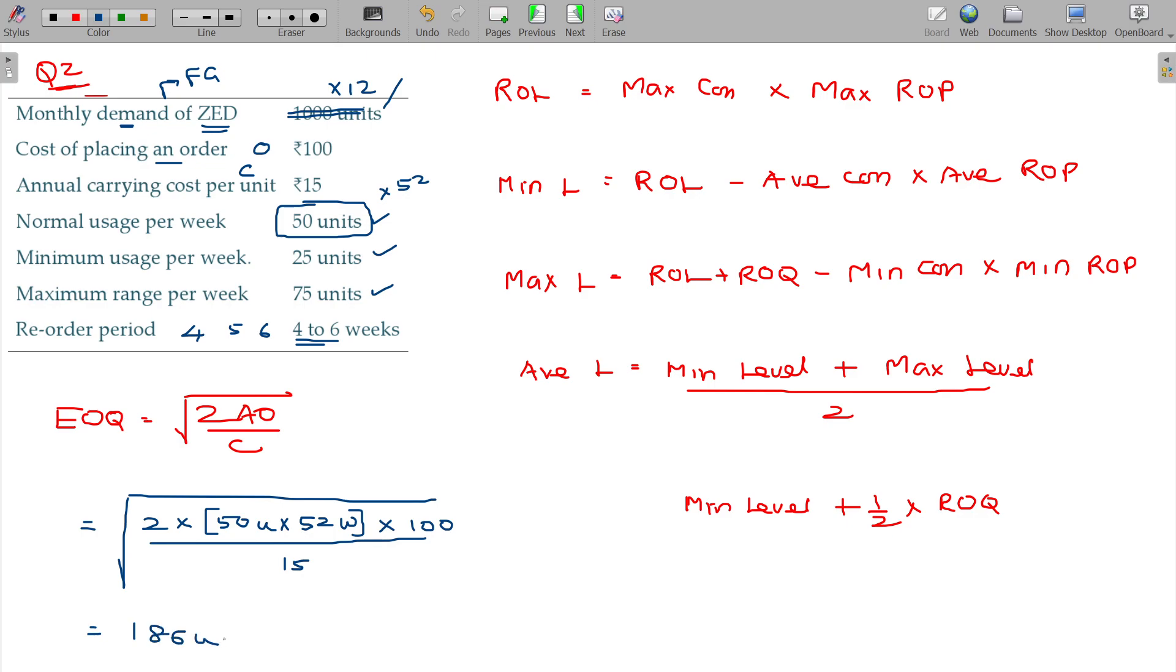So rest of the things can be calculated easily. Maximum consumption 75 units. Maximum reorder period 6 weeks. 300, 450. 450 units will be the reorder level.